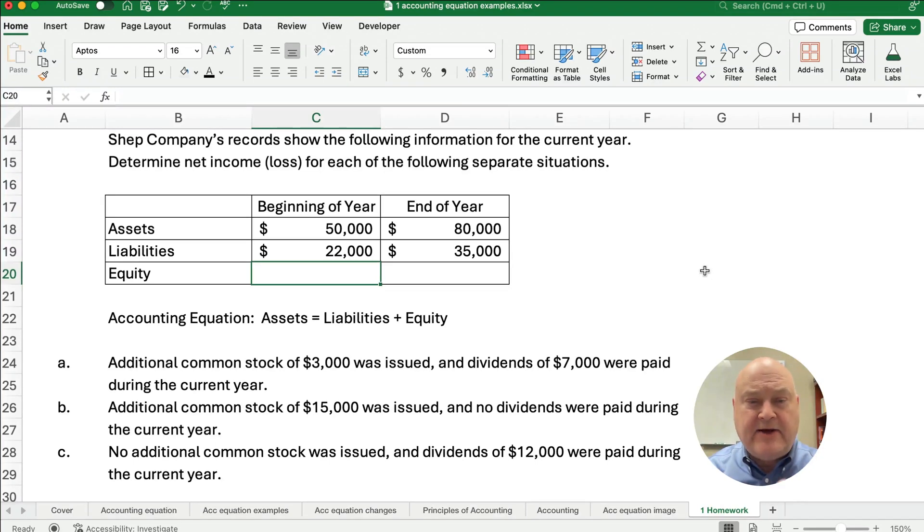Hello and welcome. Today we're working on how to calculate net income if we're given beginning and ending equity and we have some transactions like stock issuance and dividends. So let's get started.